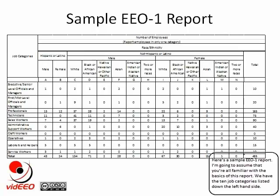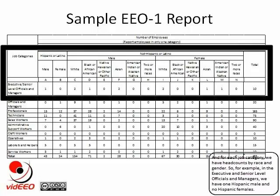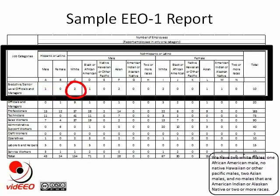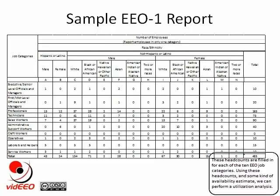Here's a sample EEO-1 report. I'm going to assume that you're all familiar with the basics of this report. We have the ten job categories listed down the left-hand side, and for each job category, we have head counts by race and gender. For example, in the executive and senior level officials and managers, we have one Hispanic male and no Hispanic females, two white males, one African American male, two Asian males, two white females, one Asian female, and one American Indian or Alaskan Native female. These head counts are filled in for each of the ten EEO job categories.